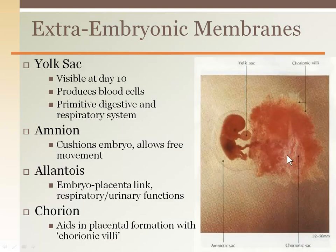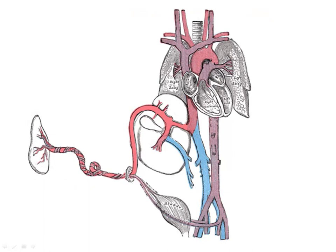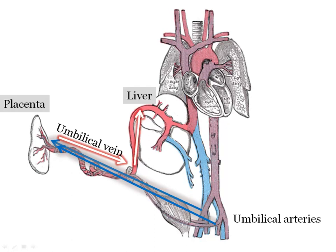The vascular projections of the chorionic villi interface with the maternal blood supply for nutrient, gas, and waste exchange. The umbilical cord is a vascular connection between the embryo and the placenta, developing between weeks three to eight as the yolk sac shrinks. It is made up of two arteries that travel away from the baby to the placenta carrying deoxygenated blood, and one umbilical vein that brings oxygenated blood back to the baby, traveling to the liver for filtering first. The vein is shorter than the two arteries, which causes the twists in the cord.